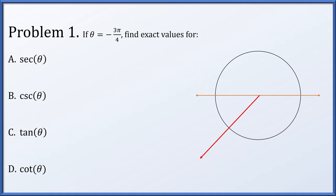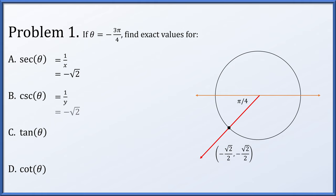The acute angle formed with the x-axis is this missing bit of π over 4. There's our reference angle, so looking up the reference angle π over 4, we'll find an x and y coordinate on the unit circle of √2 over 2, but we realize we are in the third quadrant, so we're going to make them both negative. So the point on the unit circle corresponding to our angle of negative 3π over 4 is (−√2/2, −√2/2). The secant of the angle is 1 over the x coordinate, so reciprocating, we end up with negative √2.